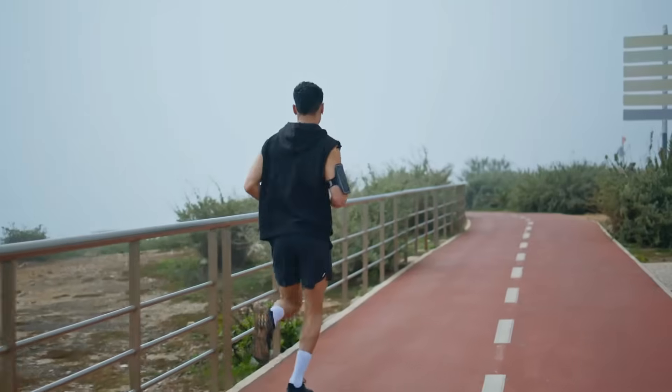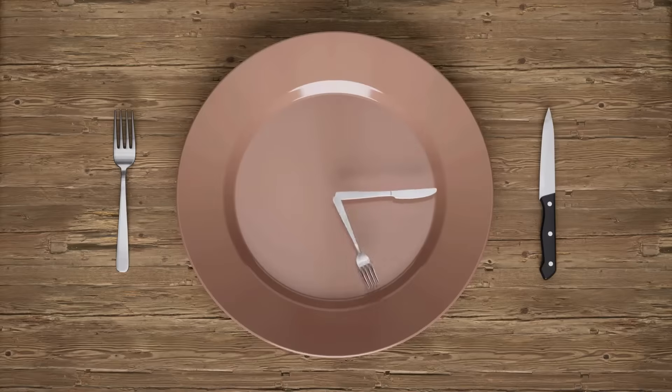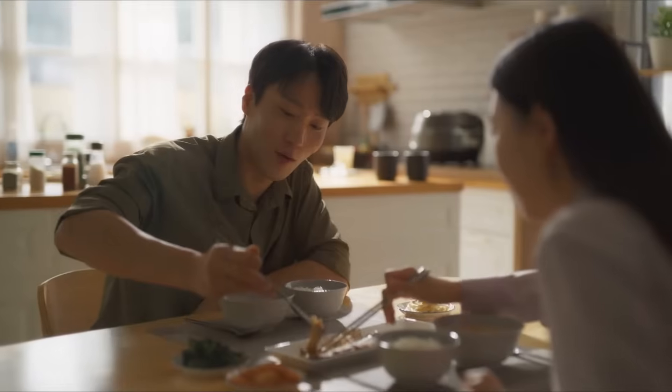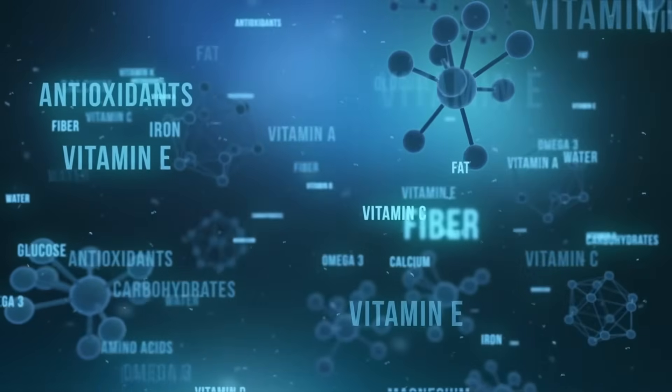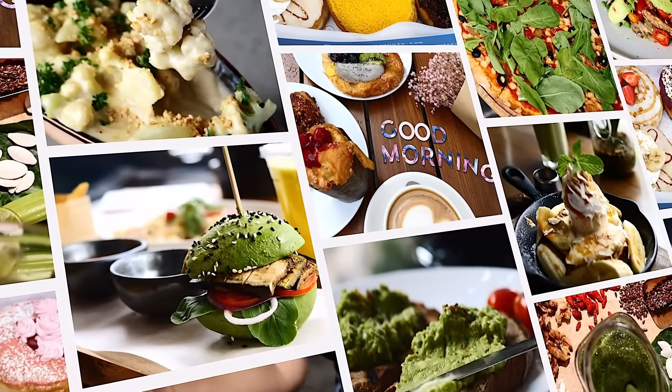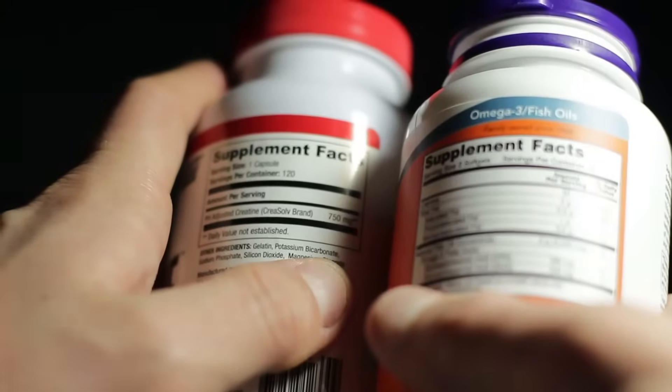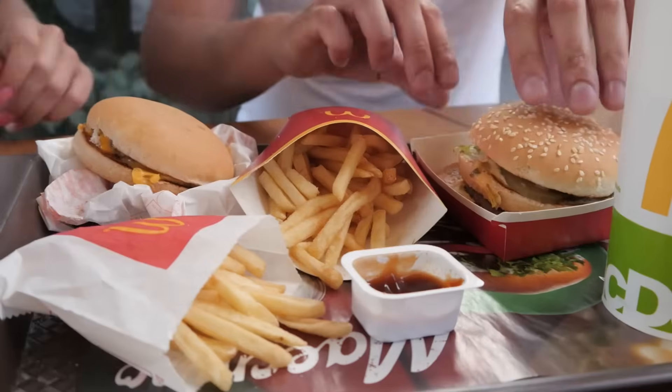Exercise regularly, especially zone 2 cardio like brisk walking or cycling. Practice time-restricted eating to improve metabolic flexibility. Include nutrients like CoQ10, PQQ, and acetyl L-carnitine in your diet or supplement regimen. And avoid things that harm mitochondria, like alcohol, processed food, and poor sleep.